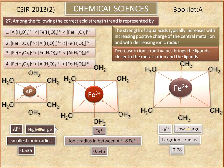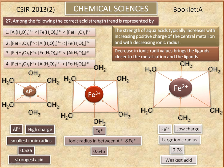Al 3+ has high charge and smallest ionic radius, so it is the strongest acid. Fe 2+ has low charge and large ionic radius, so it is the weakest acid.